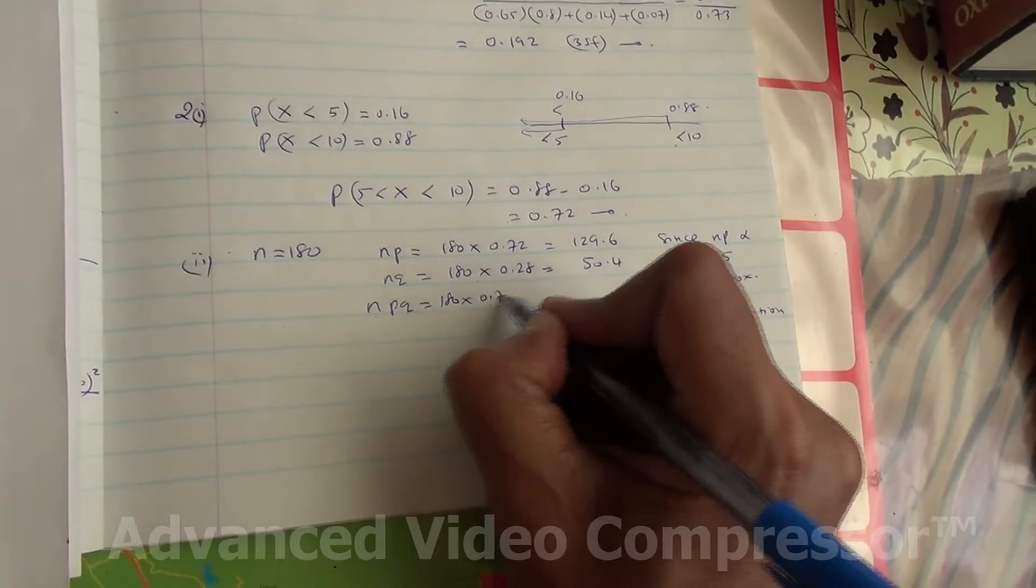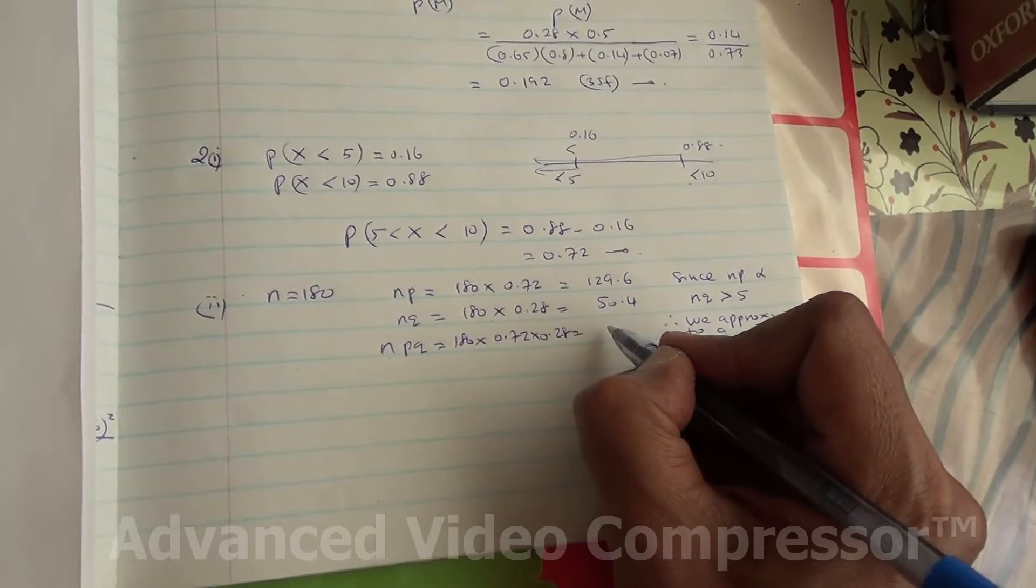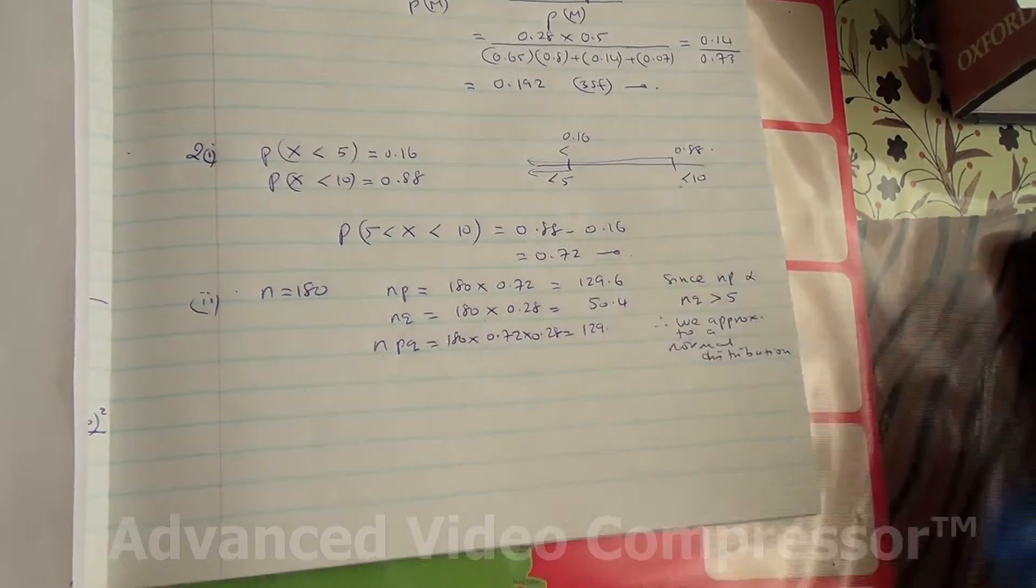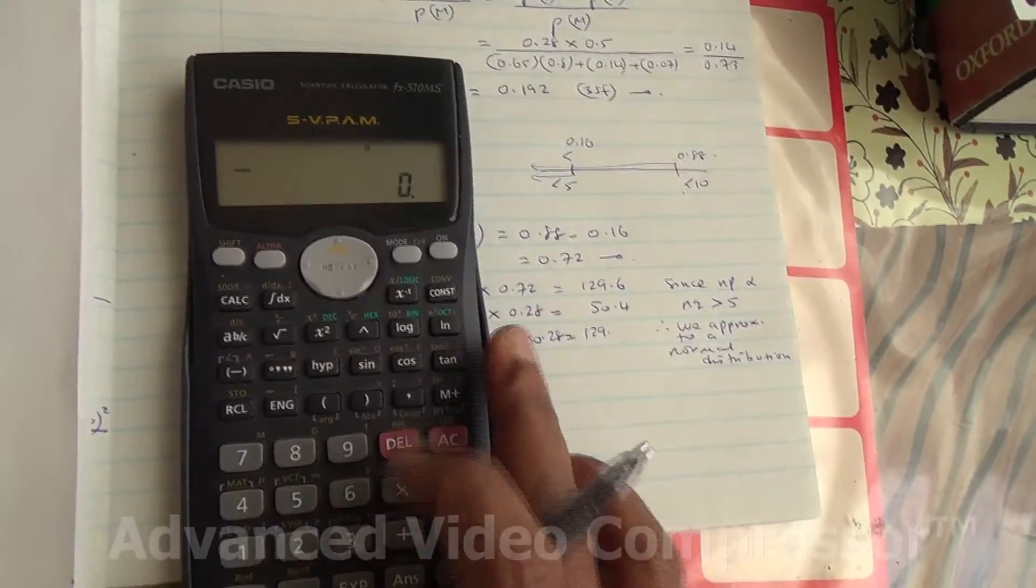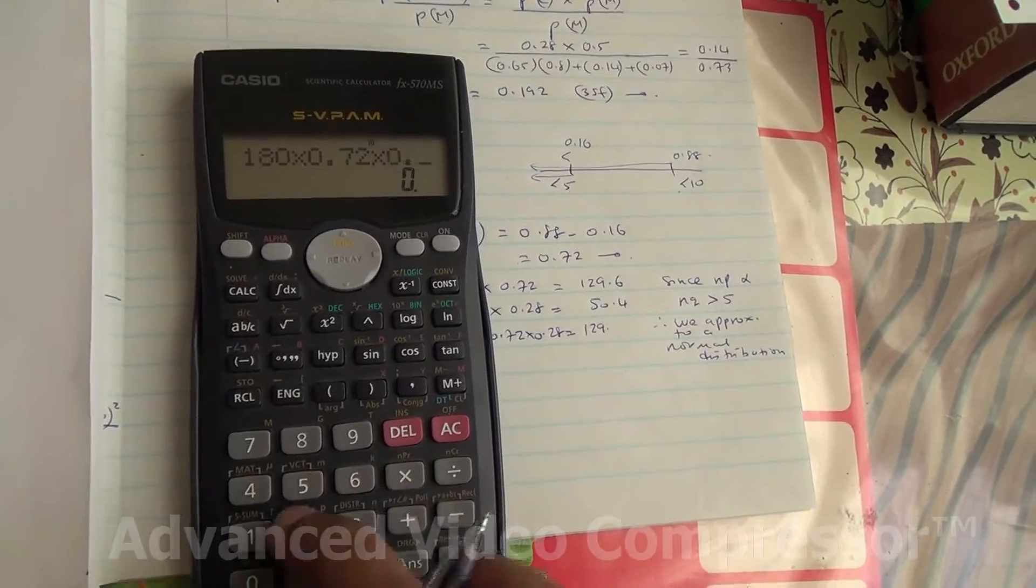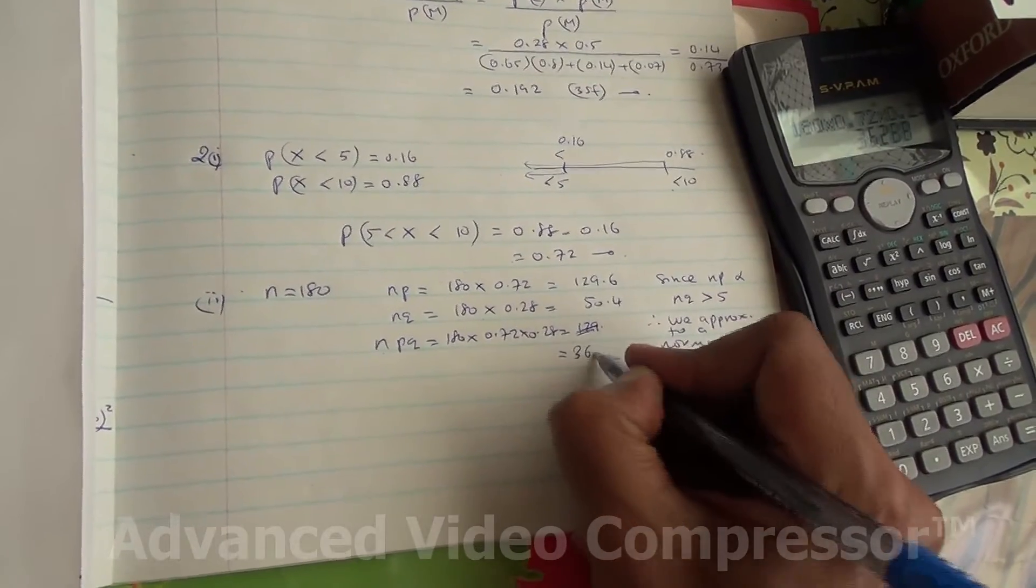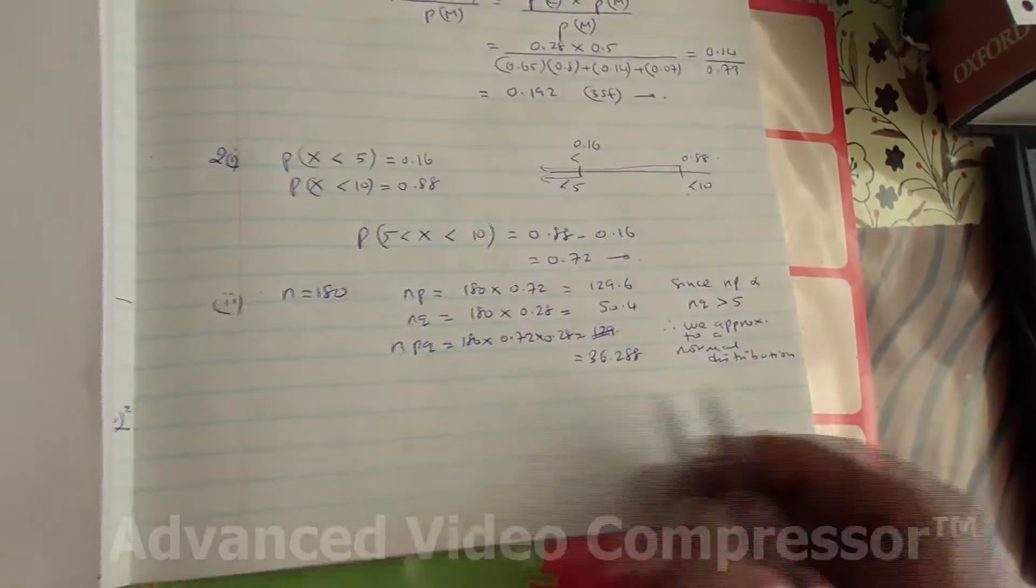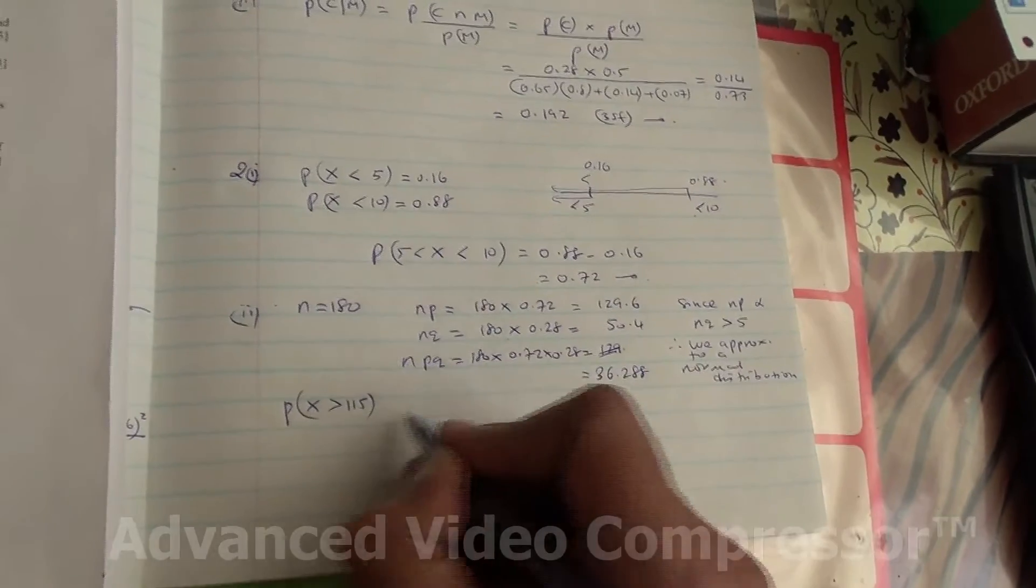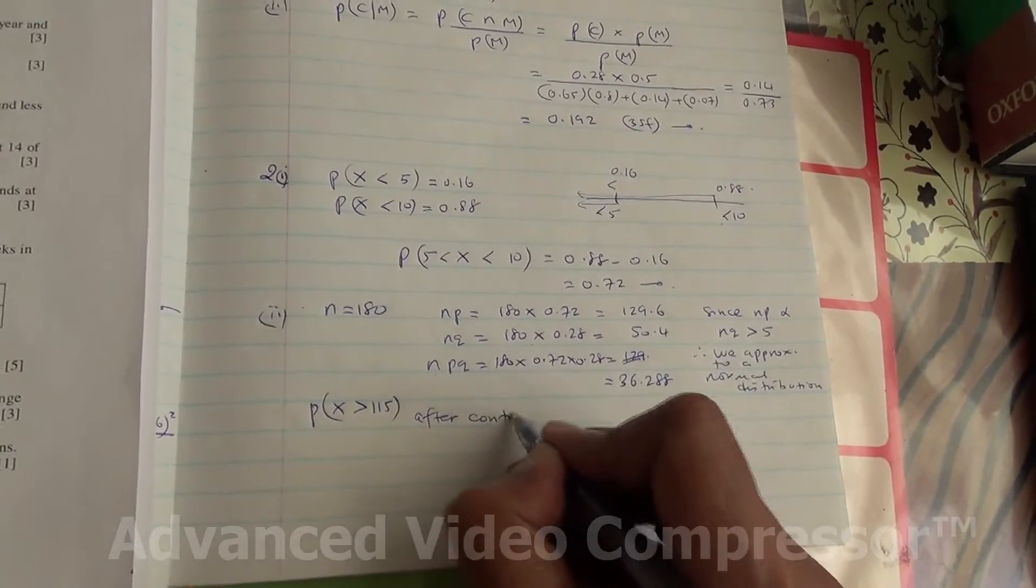We need to find the variance NPQ. 180 times 0.72 times 0.28, and that's going to give us 36.288. Now, we need to do the probability of X being greater than 115. Because we are approximating to a normal distribution, we need to do the continuity correction.